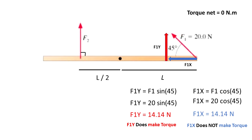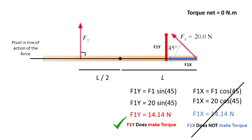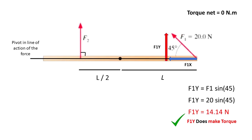It is important to remember that the x component of this force does not make torque because the pivot is located in the same line of action of the force. So when you apply the force F1x to the left, it is not going to produce torque — it is going to do compression but not torque. So for our exercise we will not consider the x component; we are only going to take the components that are perpendicular to the rod.